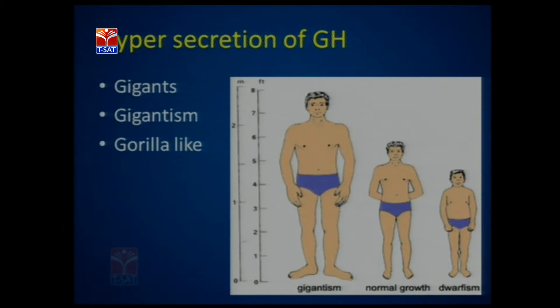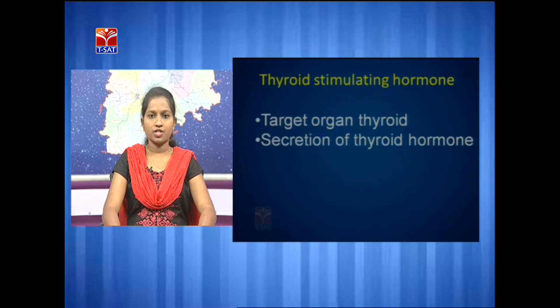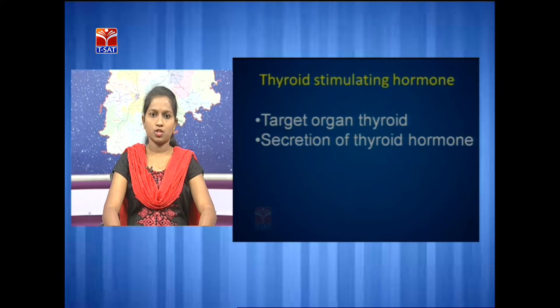The next hormone is thyroid stimulating hormone. This hormone acts on the thyroid gland and helps in the synthesis and secretion of thyroid hormones — thyroxine and thyrocalcitonin.